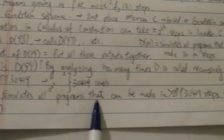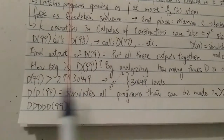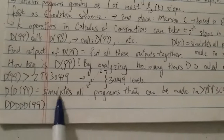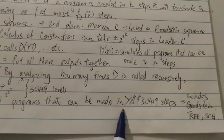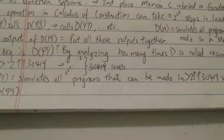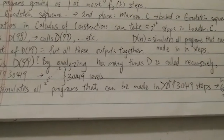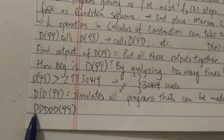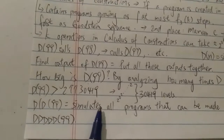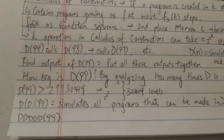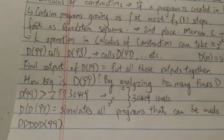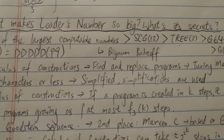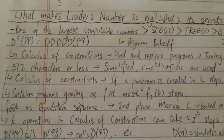With three d's, it simulates all programs that can be made in an unimaginably large number of steps — probably bigger than 3↑↑↑3 number of steps. With three d's it's already way bigger than SCG(3). But Loader's number has five d's, and that's what makes it so big. It is believed to be way bigger than anything you can build even with BEAF. So that's my quick video on what makes Loader's number so big — I tried to explain it in layman's terms. Thanks for watching and have a nice day.